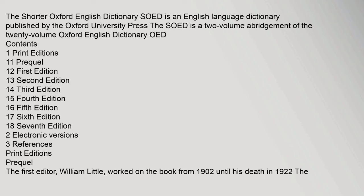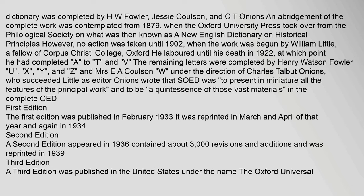The first editor, William Little, worked on the book from 1902 until his death in 1922. The dictionary was completed by H. W. Fowler, Jesse Coulson, and C. T. Onions. An abridgment of the complete work was contemplated from 1879, when the Oxford University Press took over from the Philological Society on what was then known as a New English Dictionary on Historical Principles.